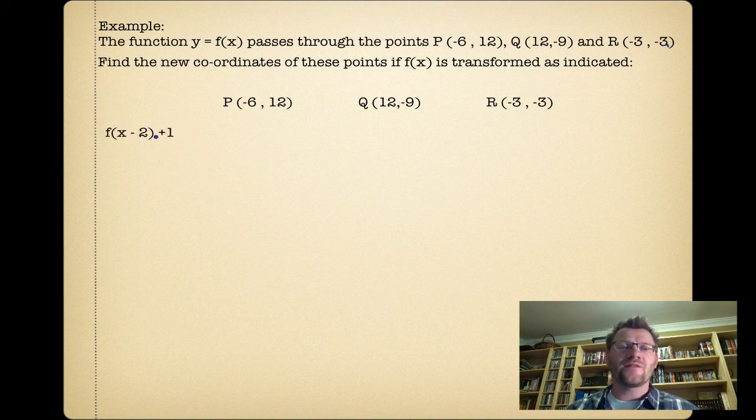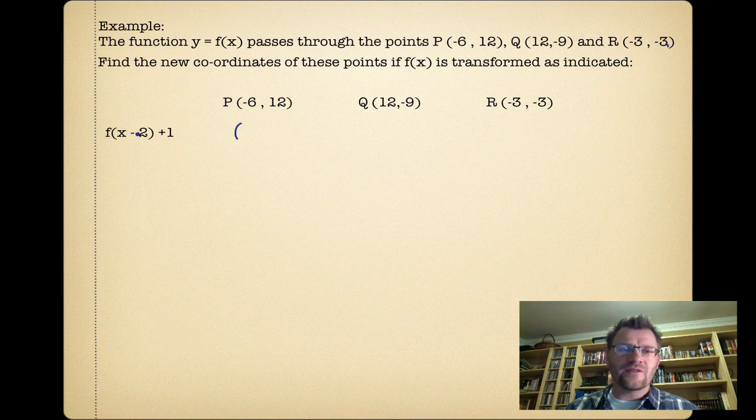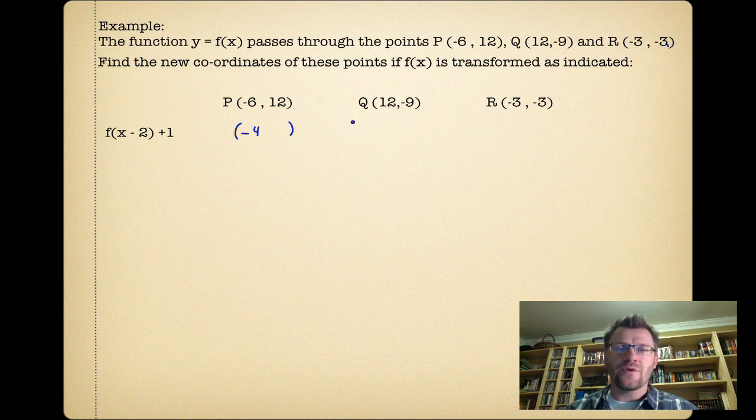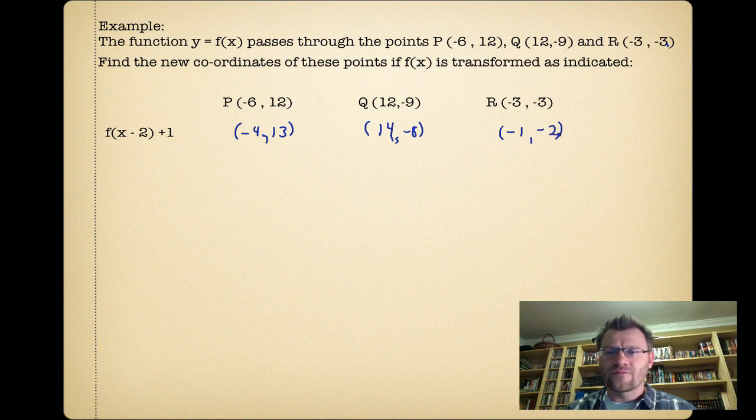First one says f(x − 2) + 1. Remember, anything inside the brackets affects the x; anything outside affects the y. This means our x-value is moved to the right two spots: that makes that −4, this one 14, and this one −1. Anything on the outside affects the y-value, so all our y-values are increased by 1. So those are our new points.